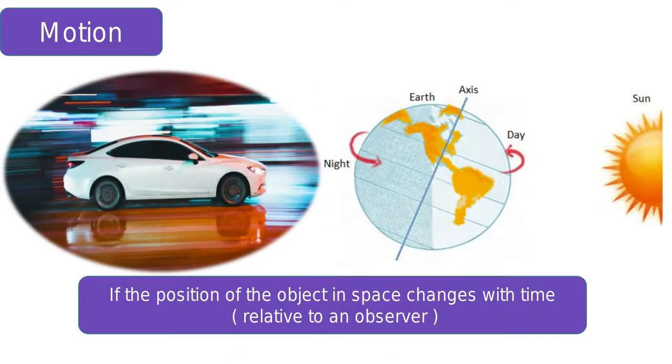Motion and rest. Objects and bodies around us move in different ways and different directions. Some move in straight lines, some move on curved paths, some rotate and some oscillate. They also move at different speeds. Some move fast while some move slowly.